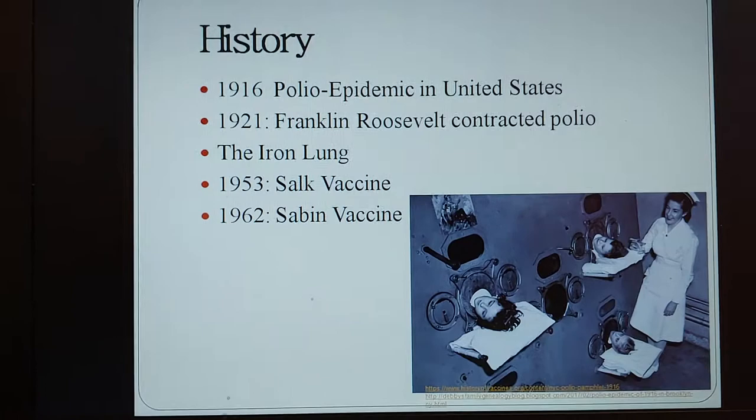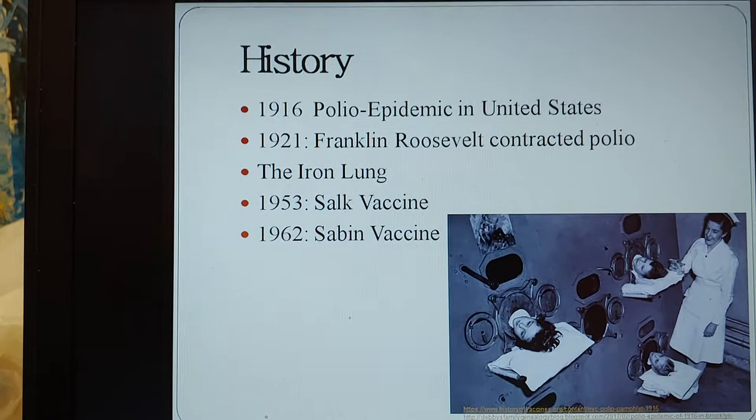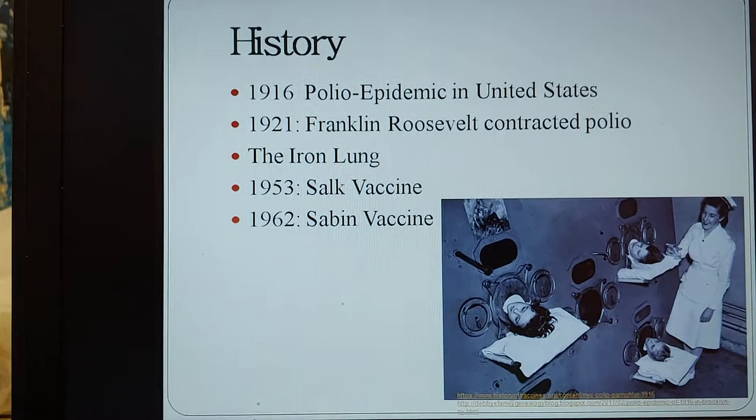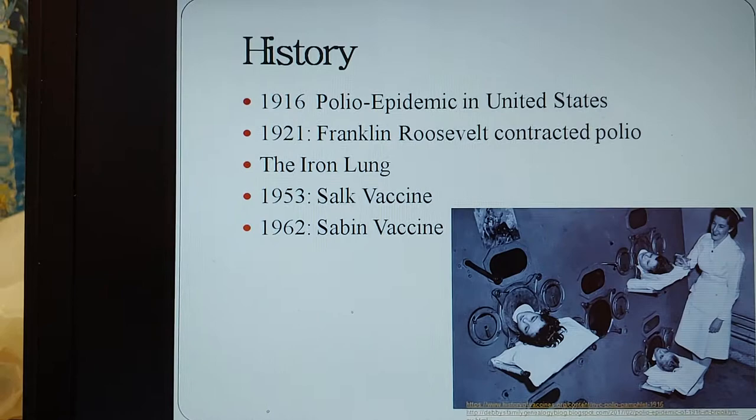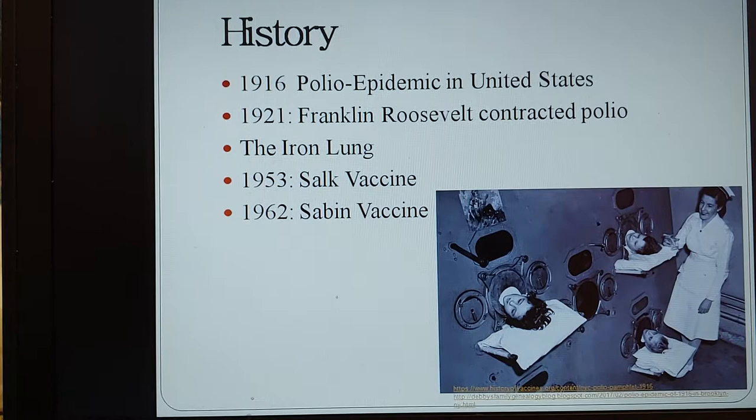In 1916, there was a polio epidemic in the United States and it took 6,000 lives and it paralyzed more than thousands. It was centered in Brooklyn, New York, and New York itself had 2,000 out of the 6,000 deaths. During the summer when it occurred, it led to state and nationwide closures of public pools, amusement parks, and any other places that children gathered.